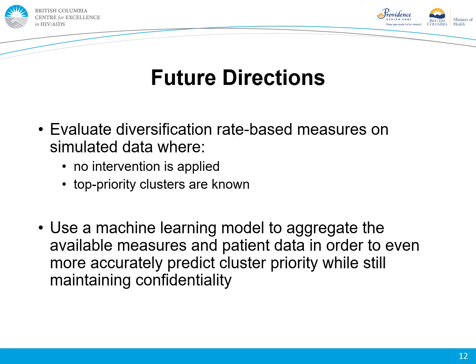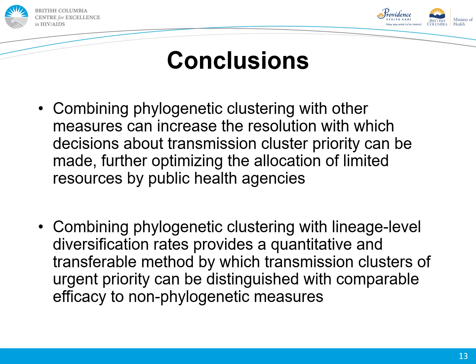Additionally, we plan to use a machine learning model, likely based in logistic regression, that will aggregate the available measures and patient data in order to even more accurately predict cluster priority while still maintaining confidentiality. In conclusion, we find that combining phylogenetic clustering with other measures can increase the resolution with which decisions about transmission cluster priority can be made, further optimizing the allocation of limited resources by public health agencies. Combining phylogenetic clustering with lineage-level diversification rates provides a quantitative and transferable method by which transmission clusters of urgent priority can be distinguished with comparable efficacy to non-phylogenetic measures.